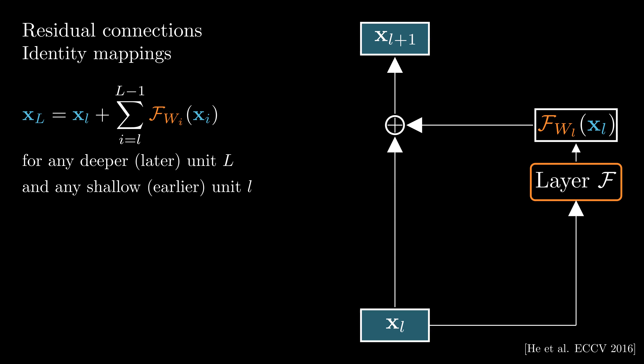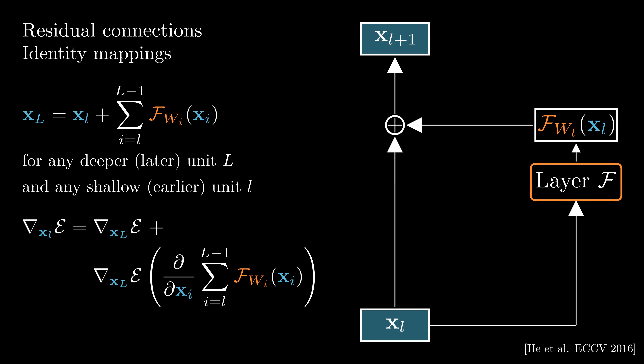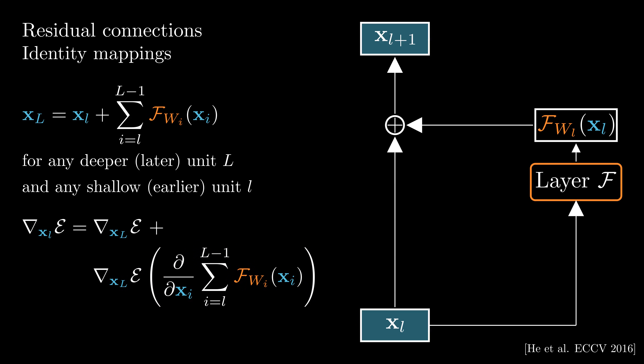This design has a nice backward propagation property. The gradient at the shallow unit consists of two components: first, the component that is directly propagated from the deeper unit, allowing gradient information to flow directly; and second, the component that propagates through the intermediate weight layers. This alleviates the vanishing gradient problem and enables us to train deeper models.